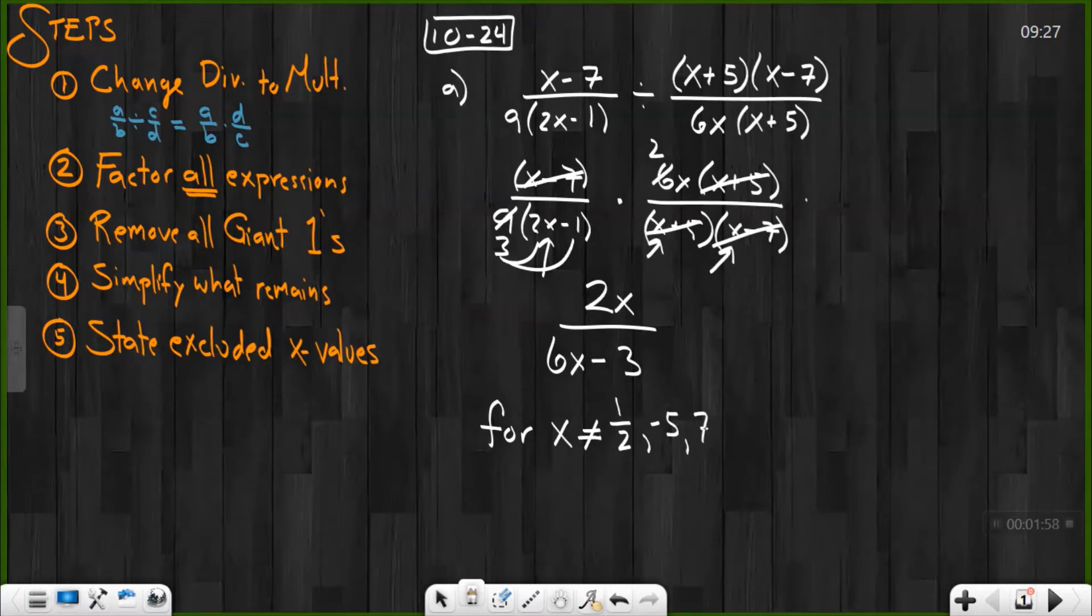And since the original problem was division, I also have to look up top here. x cannot be the opposite of plus 5. I already got that negative 5. And we have an x out front there. What would make that x 0? Well, 0 would make that x 0. So x can also not be 0. And that would be our final expression and the excluded values of x. Let's check b.